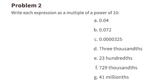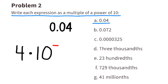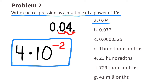Problem number two: write each expression as a multiple of a power of ten. A: four-hundredths. We start with a four in the hundredths place. To write this expression as a multiple of a power of ten, we can start with a four and multiply it by ten to a negative power, because we're representing a decimal. Since the decimal point is two place values to the left of the four, the exponent will be a negative two.